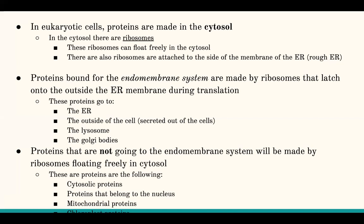Examples of proteins made on freely floating ribosomes are cytosolic proteins, nuclear proteins, mitochondrial proteins, and chloroplast proteins. Does anyone have any questions on anything I talked about so far?